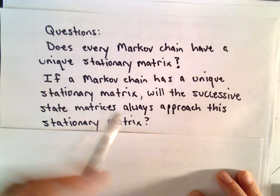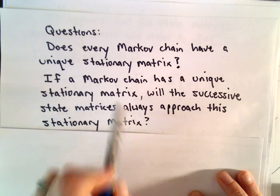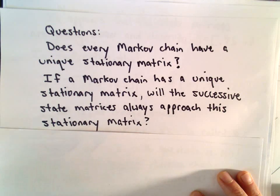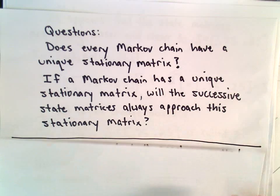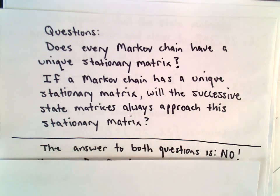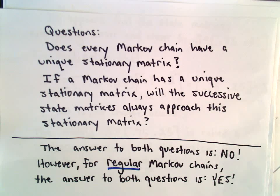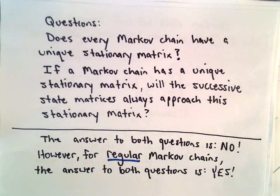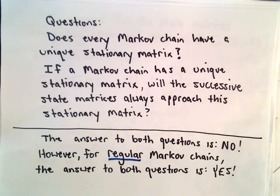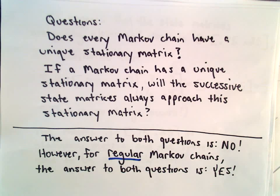Maybe the market share could have been who knows what at the beginning. If we always start multiplying by this transition matrix, will we eventually arrive at that same market share? And it turns out, no, that's not true in general. However, it is true for a special type of Markov chain, and it's true for what are called regular Markov chains. Both of these questions are, in fact, yes for regular Markov chains. So what I'm going to do in the next video is define what a regular Markov chain is, and we're going to look at using these regular Markov chains to find a stationary matrix.